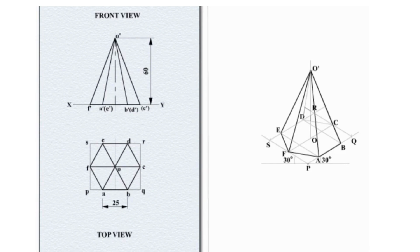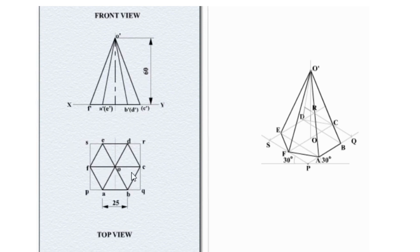Coming to the solution: the problem gives a hexagonal pyramid with side 25mm and axis height 60mm. The base is resting on the HP, so the front view is a triangle and the top view true shape is a hexagon. You already know how to draw the front and top views of the hexagonal pyramid from the projection of solids topic. After drawing the top view hexagon and front view triangle, name the points as A, B, C, D, E, F.